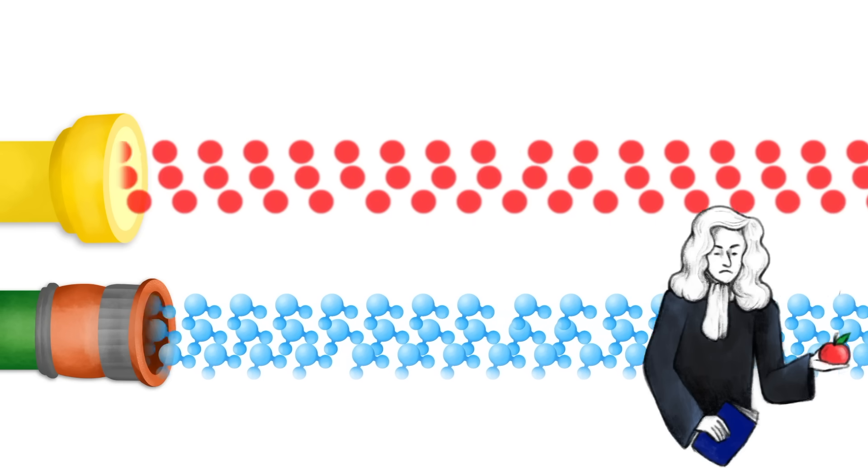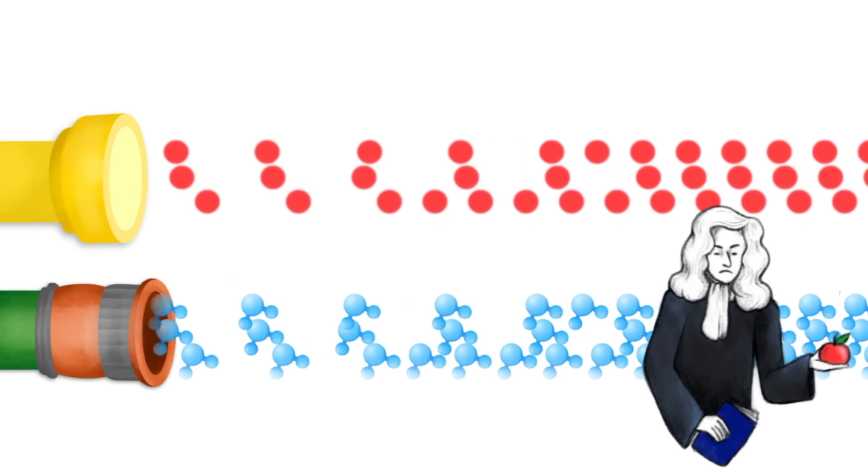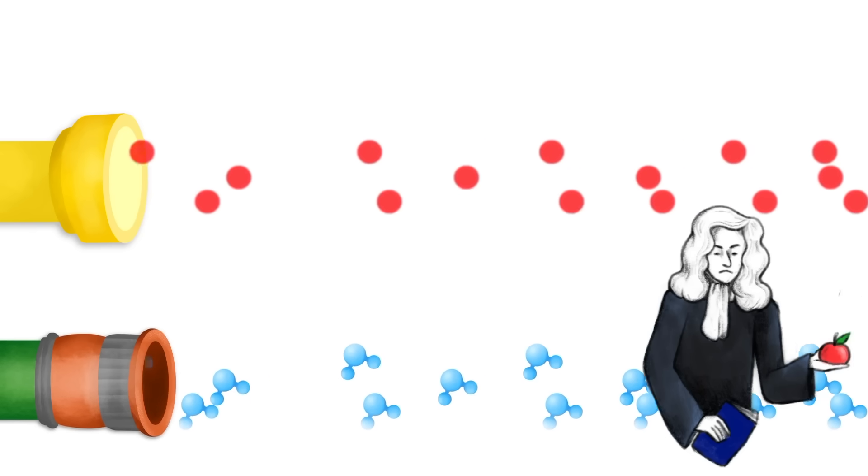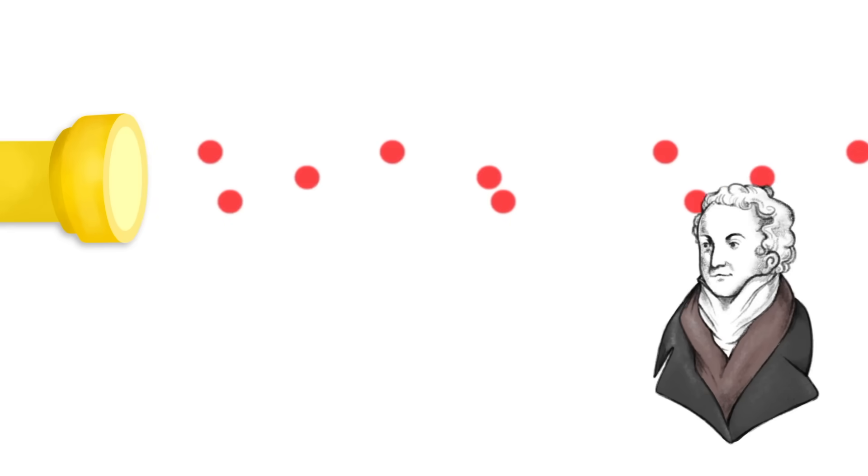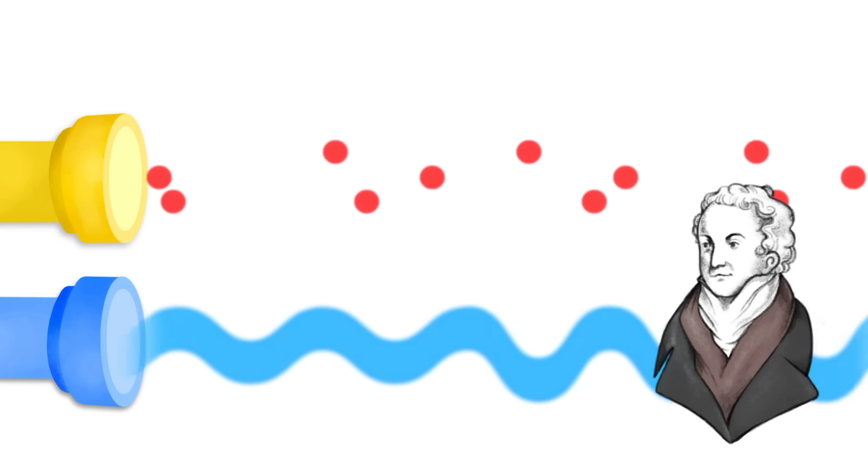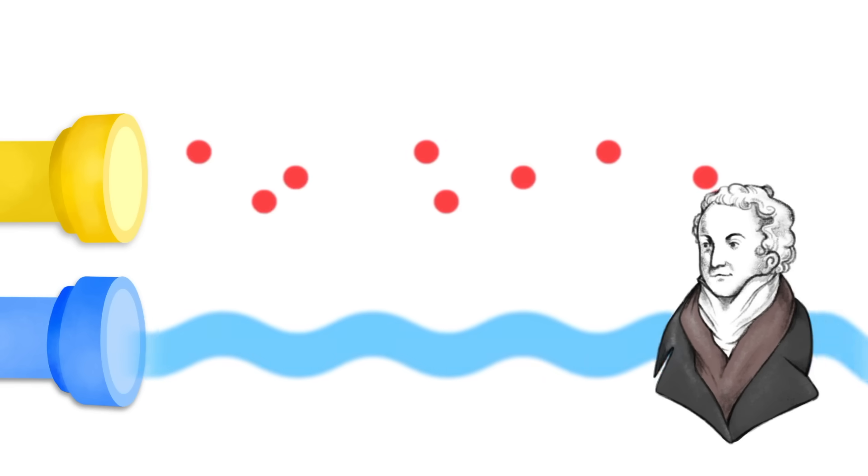If you turn down the laser enough, Newton would have expected that light comes out in these individual particles. Instead, people like Thomas Young imagine light coming out as some sort of wave. In this case, no matter how much you turn down the laser, the light would still be a wave, it would just be less and less wavy. The light travels forward not in lines, but as peaks of a wave progressing forward.